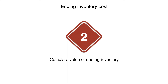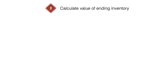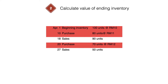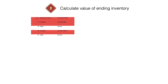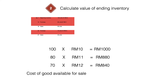In the second step, we find the value for the ending inventory unit we just calculated. To do that, we calculate the cost of goods available for sale by adding all the values for beginning inventory in RM and all the purchases in Ringgit Malaysia. The total cost of goods available for sale is RM2,720.